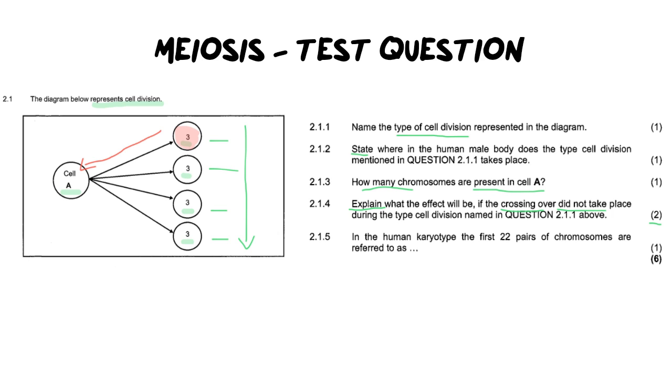The problem is they are actually asking you to describe the effect of crossing over and then what it will not produce. And so many of you go straight for the product but you don't actually talk about the process. So in order to get two marks here you need to say there will be no exchange of genetic material. One mark. And therefore there will be a decrease in variation.